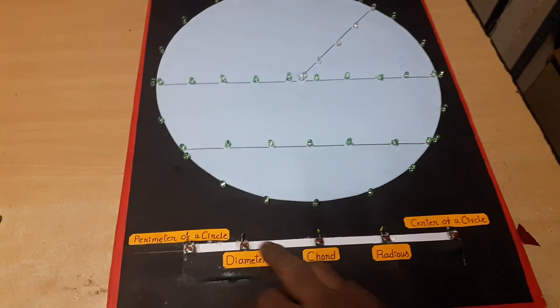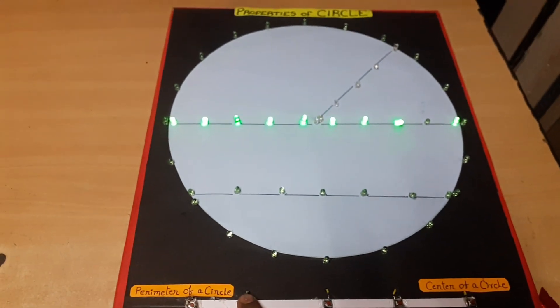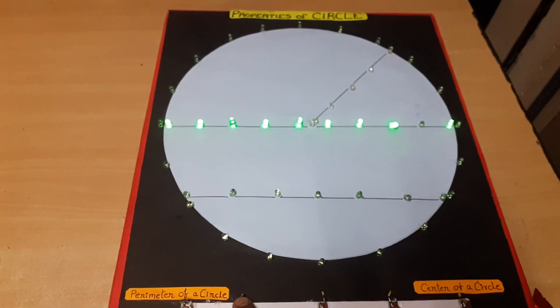The second switch shows the diameter of the circle.